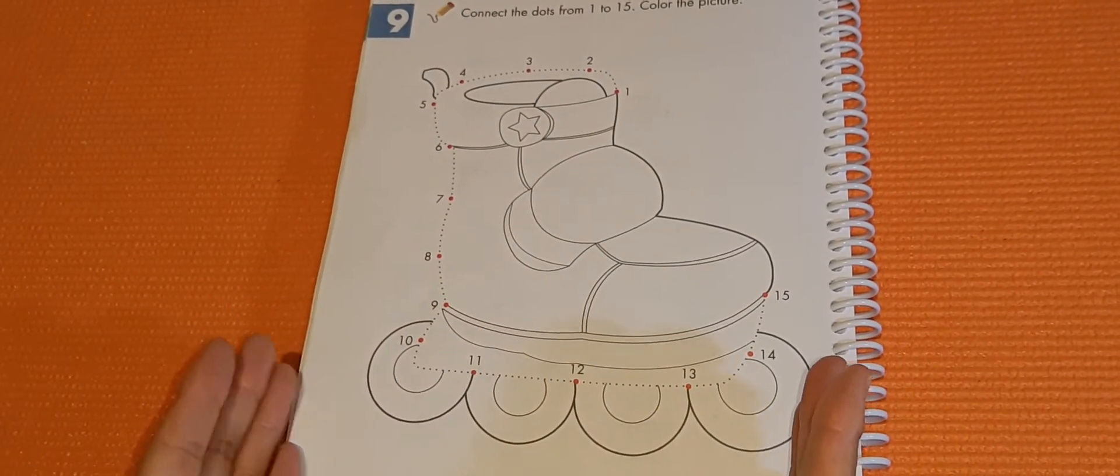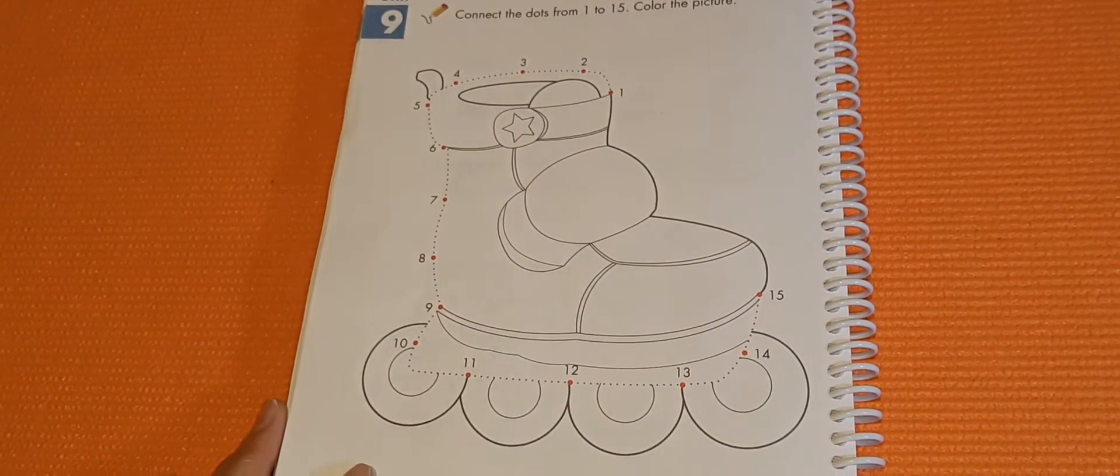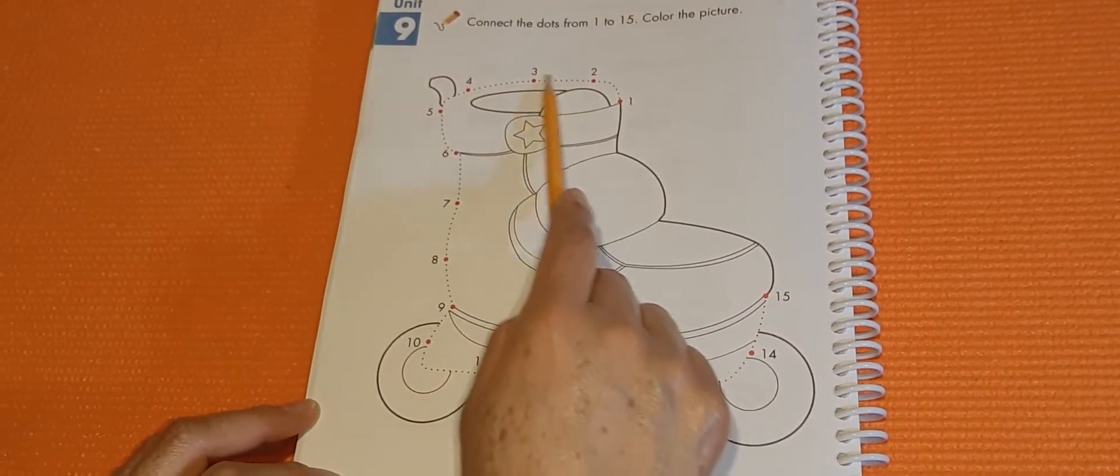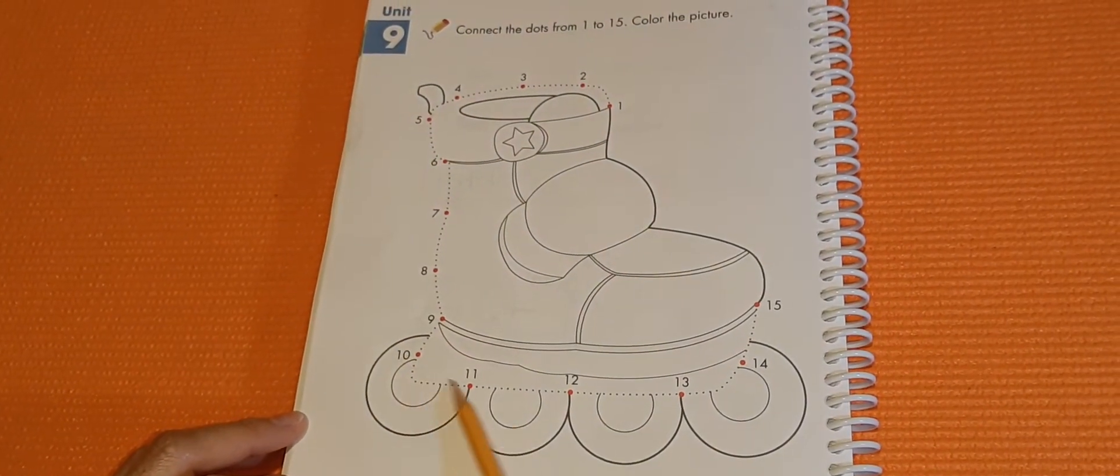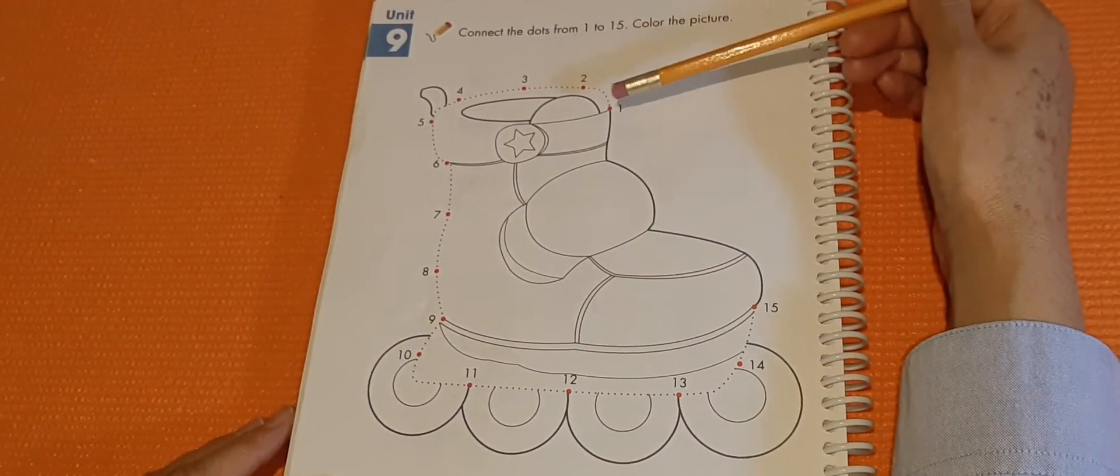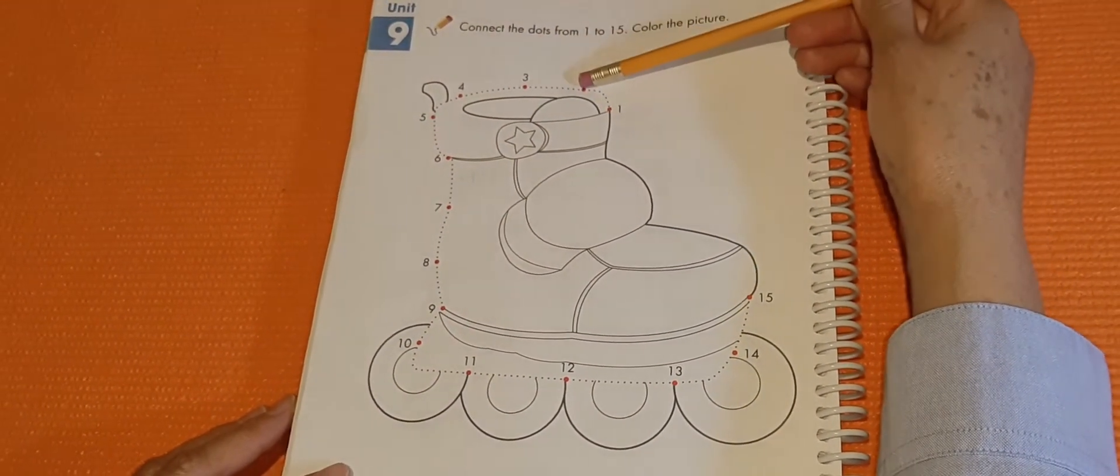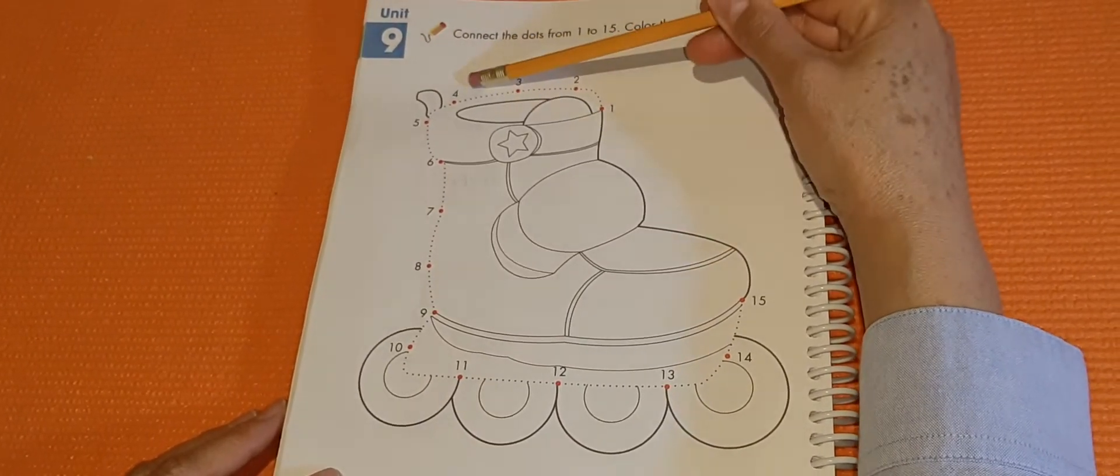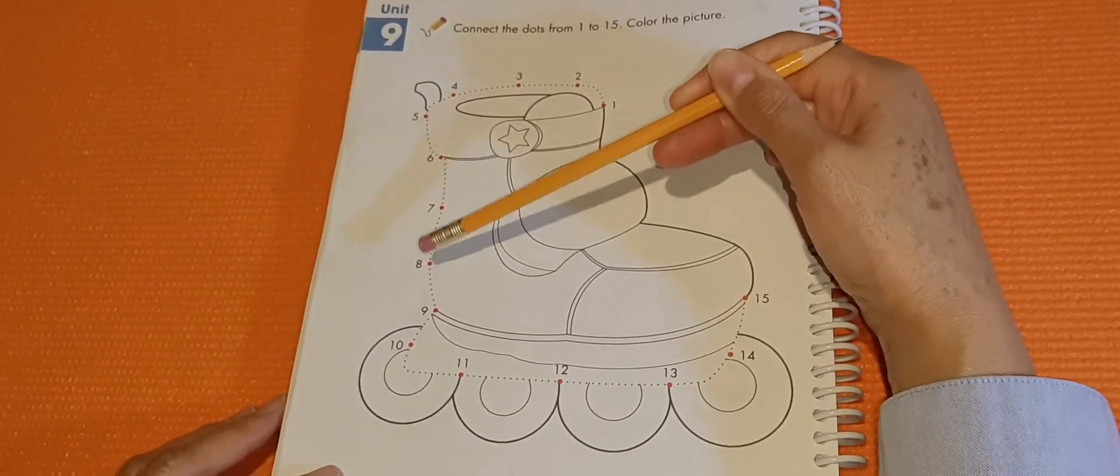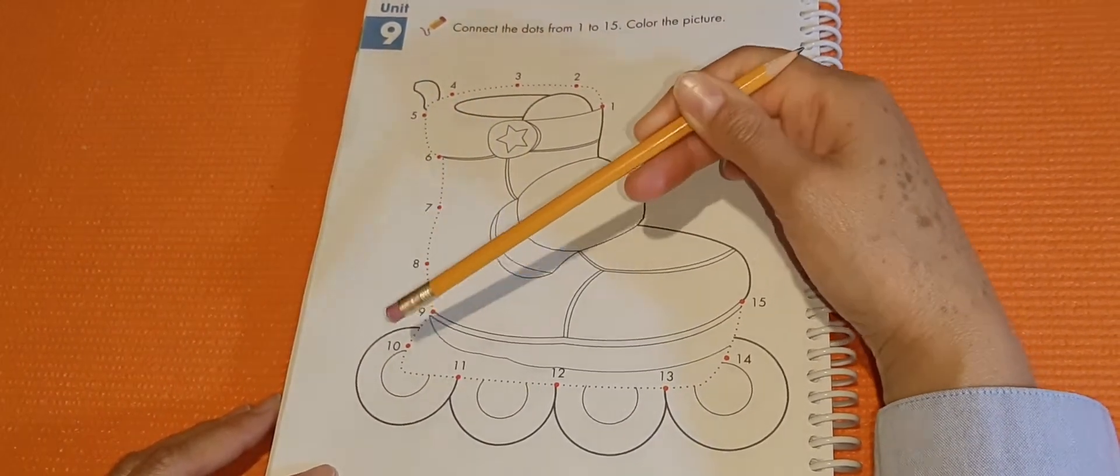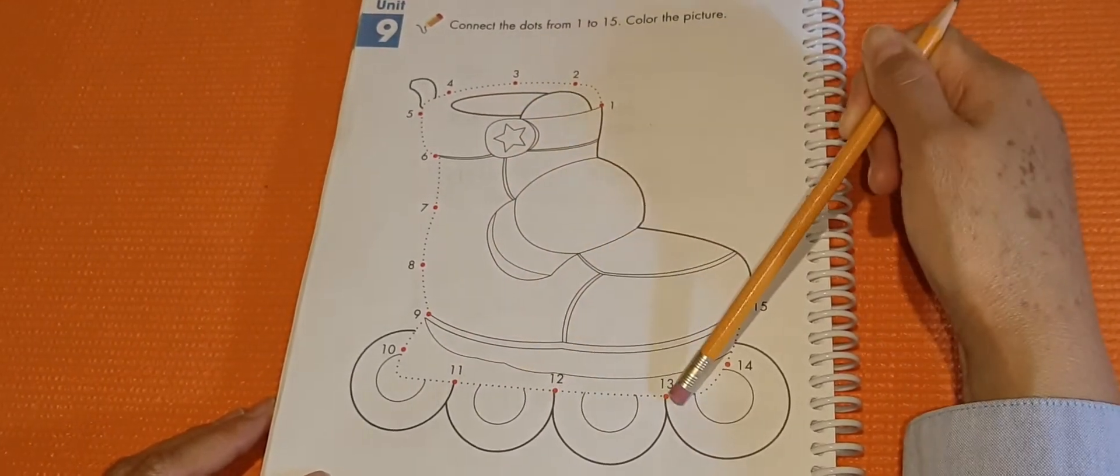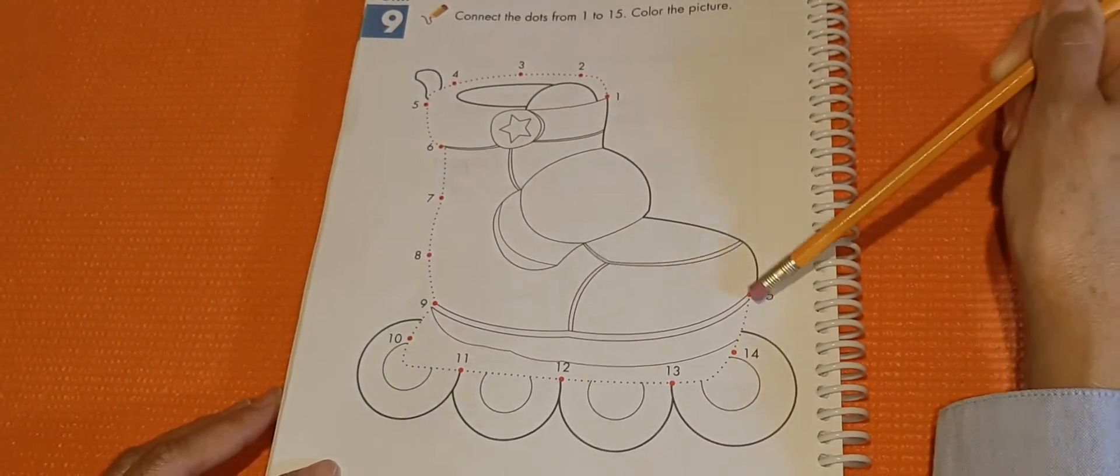So, you need, first of all, you need to connect the dots. You are going to take your pencil and you need to go all the way, counting the numbers. So, count with me. 1, 2, 3, 4, 5, 6, 7, 8, 9, 10, 11, 12, 13, 14, 15.